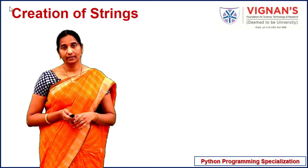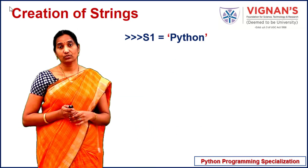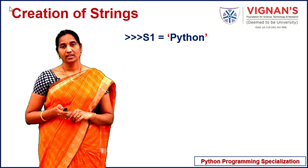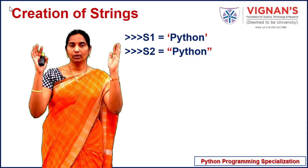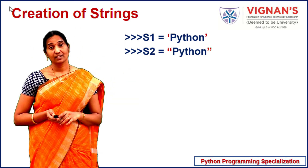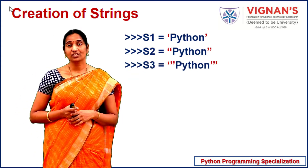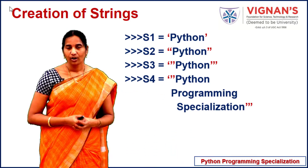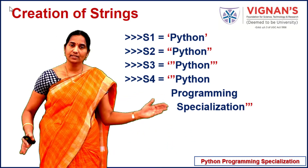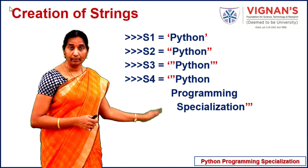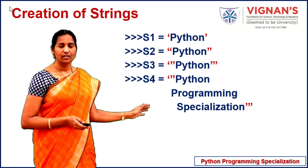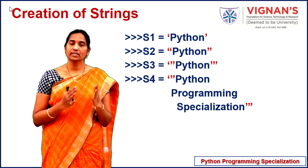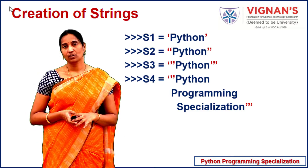Let's see how we can create strings. Here, variable s1 is created as a string storing 'Python', enclosed in single quotes. You can also use double quotes — s2 is again a string using double quotes. s3 is a string enclosed in triple quotes, which can be used to represent strings spanning multiple lines. s4 is another string. So s1, s2, s3, and s4 are all treated as strings because they store string type data.